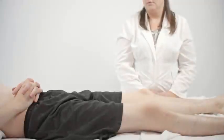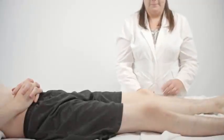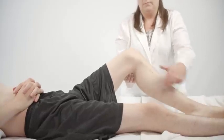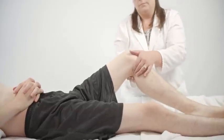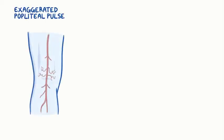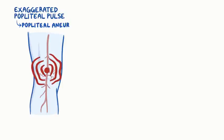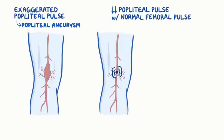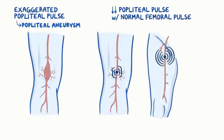Let's take Fred's popliteal pulse too. Flex one of Fred's legs a little — it should be relaxed. Curl both hands around the knee and into the popliteal fossa, pressing deep. An exaggerated popliteal pulse is characteristic of a popliteal aneurysm. A diminished popliteal pulse with a normal femoral pulse tells us there's an obstruction of a thigh artery, which is characteristic of atherosclerosis.